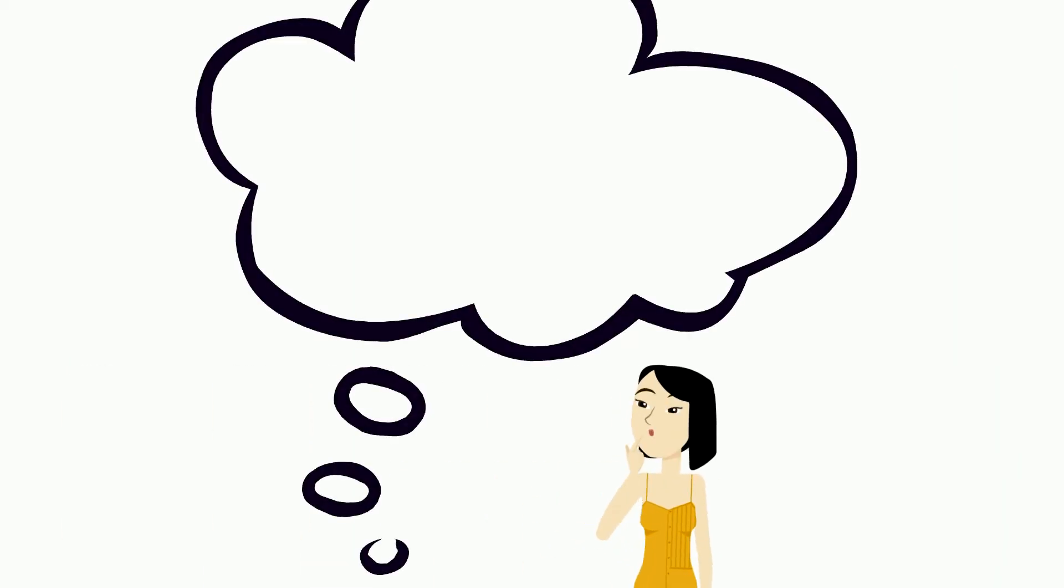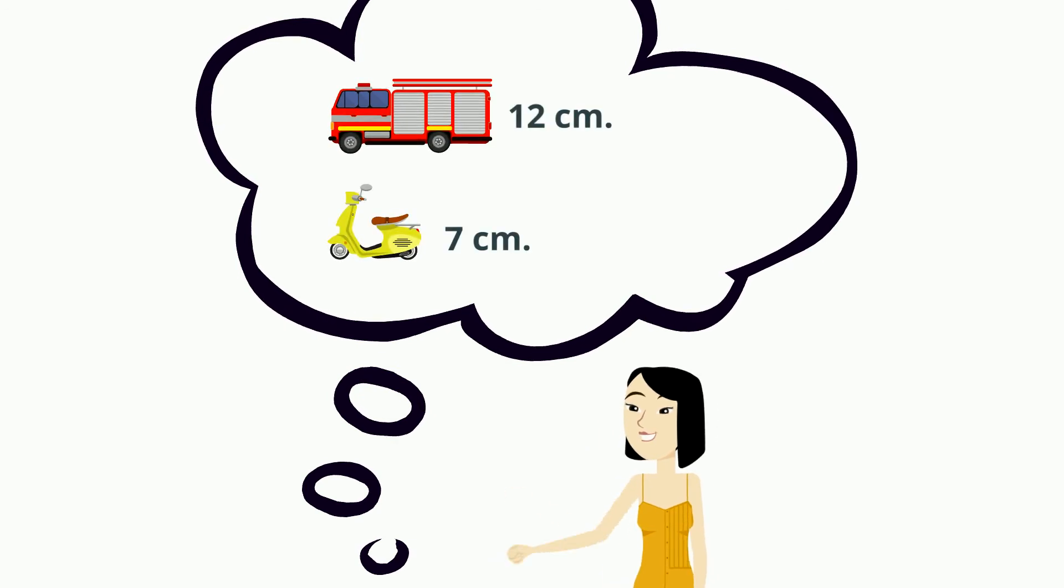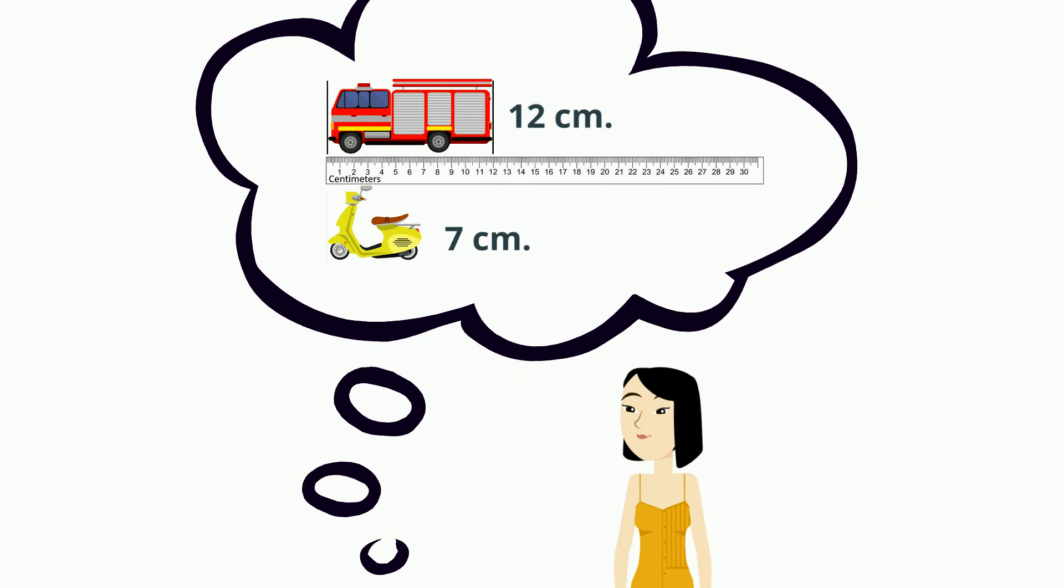Let's visualize it in our mind. I know the truck is 12 centimeters and the scooter is seven centimeters, so I know the truck is longer. I can picture them in my mind lined up with a centimeter ruler. I know that to solve this, I must subtract. So 12 take away seven is five.